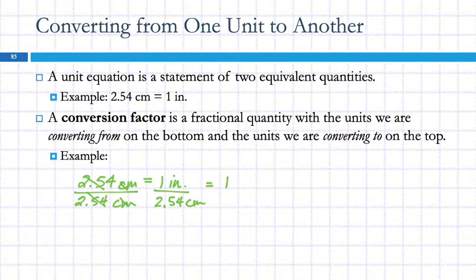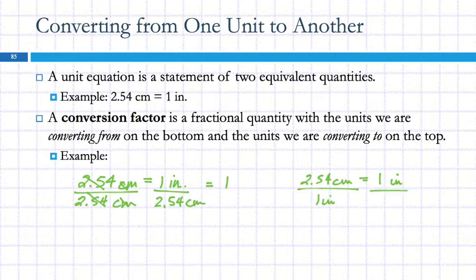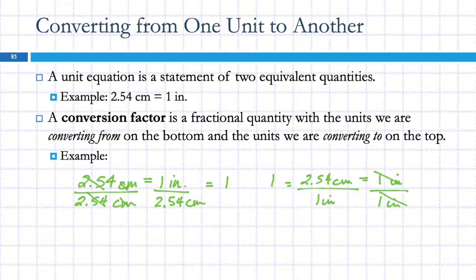What happens if I invert 1? One over 1 is still 1. So I can also invert this: 2.54 centimeters over 1 inch is still equal to 1. If I multiply something by this term — because it's numerically equal to 1 — it does not change the quantity. What it does is change the units, and only the units. So in our conversion factors, what is on the top has to be equal to what's on the bottom.